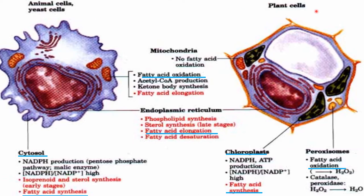The difference between animal and plant cells with respect to fatty acid synthesis: in animal cells, fatty acid synthesis takes place in the cytosol, whereas in plant cells it takes place in the chloroplast. Beta oxidation or fatty acid oxidation takes place in the mitochondria in animal cells, whereas in plant cells it takes place in the peroxisome. The similarity is that fatty acid elongation and desaturation takes place in the endoplasmic reticulum in both plant and animal cells.